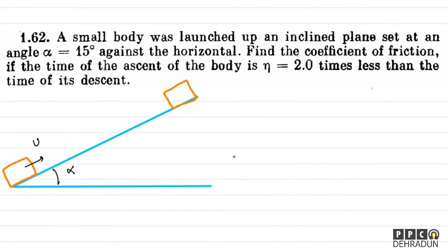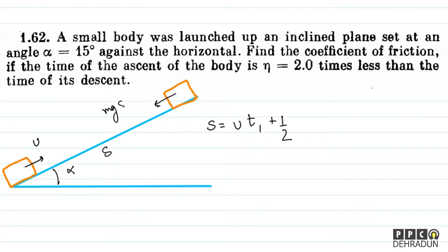For the upward journey, let's look at the equation for distance s along the inclined plane. s equals u·t1 plus half·a·t1². Now, what is the acceleration? One force is mg sin alpha acting down the incline, and the friction force is mu times N acting down the incline as well (opposing upward motion).